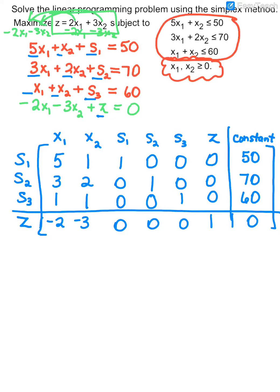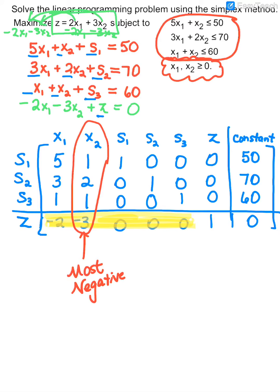Now that our augmented matrix is set up, we are going to find what's known as our pivot element. When looking for your pivot element, you focus only on the numbers on the bottom row that represent your main and slack variables. Out of those numbers, you choose the one that is the most negative — the furthest to the left of 0. If you don't have negatives, you've either set it up wrong or you've gone through a rotation and you're finished. So this becomes what we call the pivot column because negative 3 is the most negative.